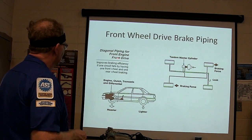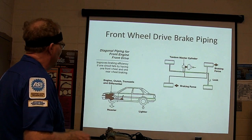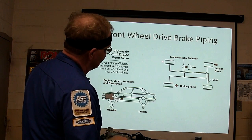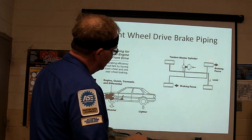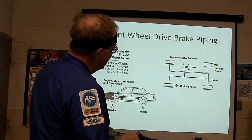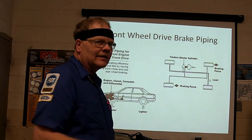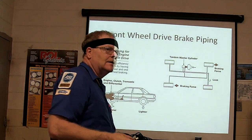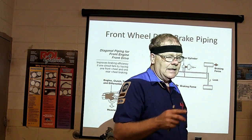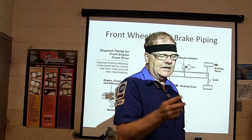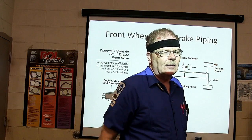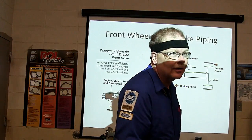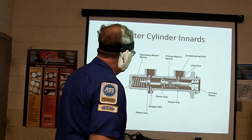Diagonal piping for front-wheel drive is really important because of the way it affects how you bleed the brakes. Sometimes this corner and that corner are hooked together, and that affects the bleeding order. That Nissan in here — Gene Taylor's Nissan — had been in an accident and the brake pedal never felt right until we bled the brakes in the exact order Nissan specified. Bleeding in the right order makes all the difference.